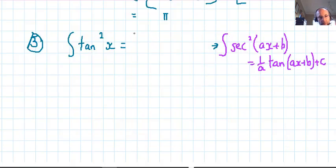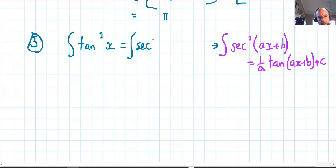So this is the integral of (sec²x - 1) dx, which is tan(x), where we use the purple stuff now, minus x plus c.